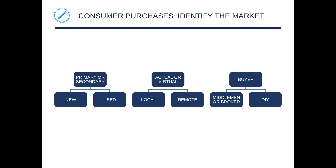Another step is identifying the market. You have primary or secondary, actual or virtual, and buyer markets. Primary or secondary means new versus used. Actual or virtual means local versus remote — that's your eBay versus your JCPenney's. As the buyer, you may use a broker or middleman — someone brokering a deal like a house or a car salesman — acting as an intermediary to get you the product you need, or you can do it yourself.